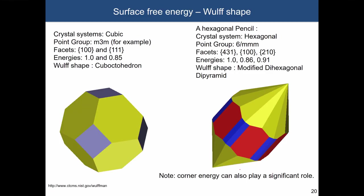Here are just a couple of examples. If you have a certain point group, you can calculate what is the arrangement of atoms within the crystal, calculate individual facets, and then predict how the shape will look.